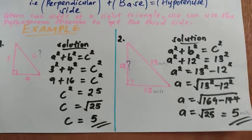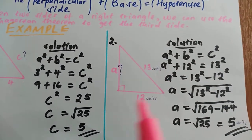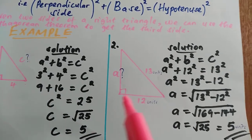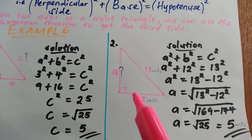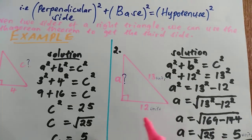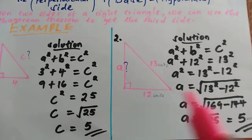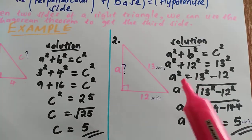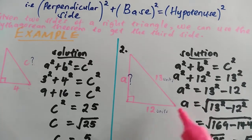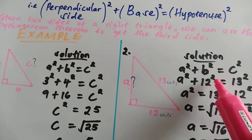In the second example, we have a right triangle where two of its sides meet at a 90 degree angle. The hypotenuse is given as 13 units and the base is 12 units, and we are looking for the perpendicular side. We use the Pythagorean theorem: a squared plus b squared equals c squared, where b is 12 and c is 13.